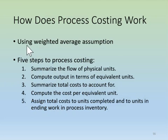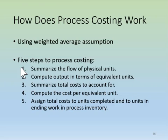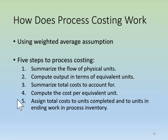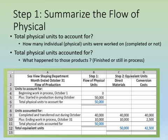The weighted average assumption combines beginning inventory units and costs with current period units and costs to get a weighted average cost. To figure out the cost of making a completed product versus a partially completed product, use the following five-step process costing procedure: Step one, summarize the flow of physical units. Step two, compute output in terms of equivalent units. Step three, summarize total cost to account for. Step four, compute the cost per equivalent unit. Step five, assign total costs to units completed and to units in ending work in process inventory.